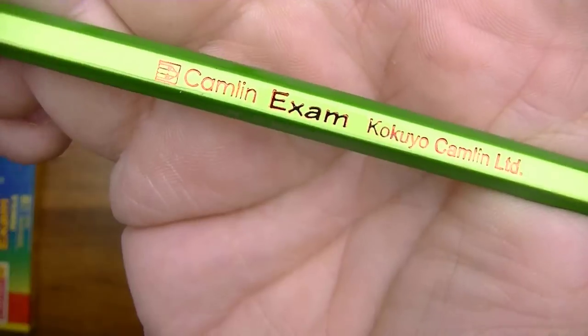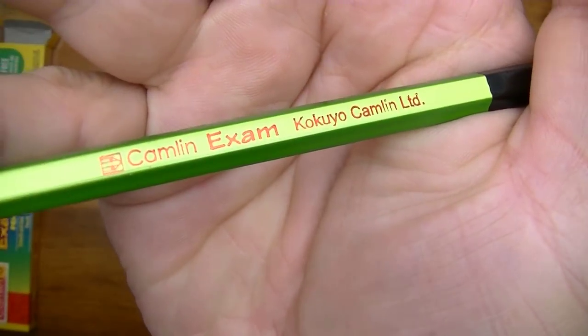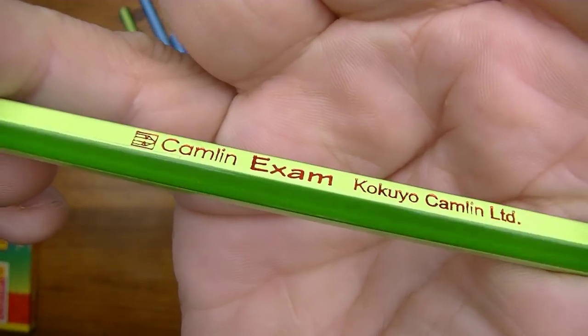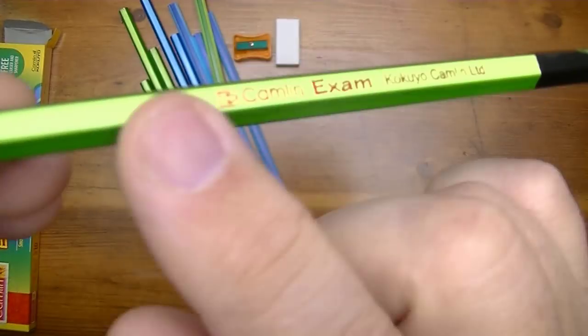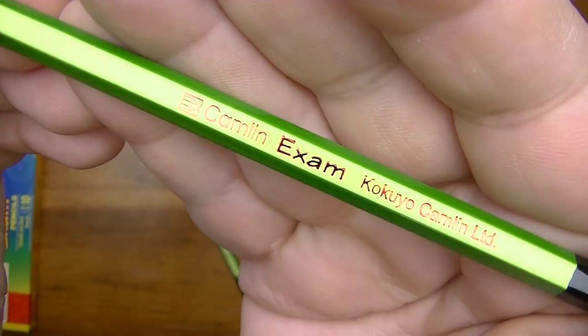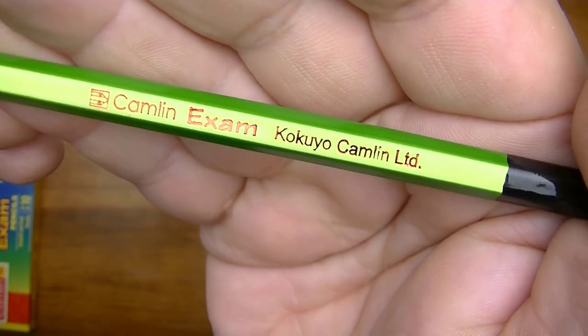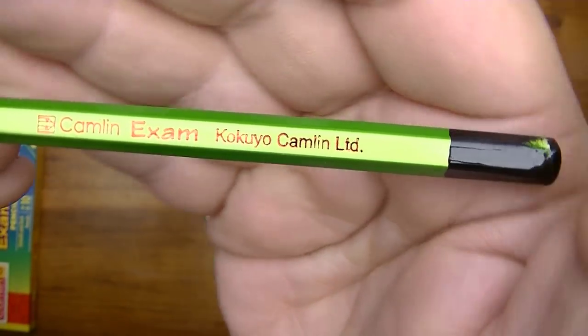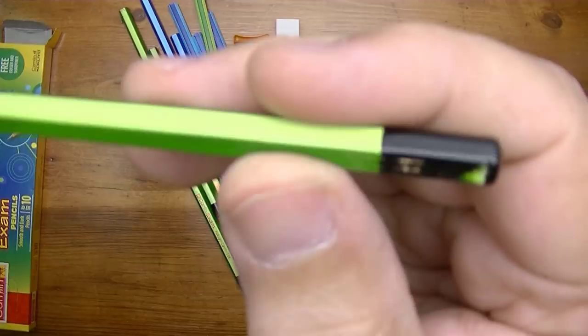It's a red foil type lettering. It has the reflective red foil imprint. And it says Camlin exam, Kokuyo Camlin LTD which means limited.